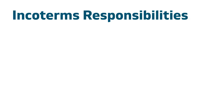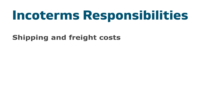Next, you want to understand the responsibilities connected to incoterms. Basically, incoterms define the following rules of the shipment process. First, shipping and freight costs — incoterms dictate which party will be responsible for the costs of shipping and freight. Second, the point of delivery — incoterms indicate the point at which responsibilities are transferred from the seller to the buyer, which is called the delivery point.